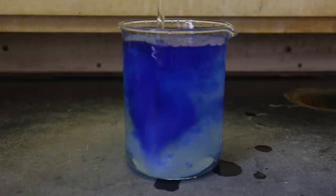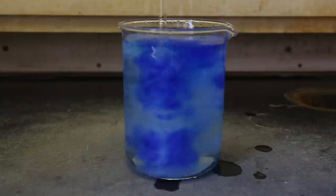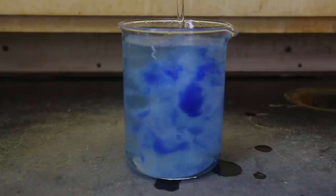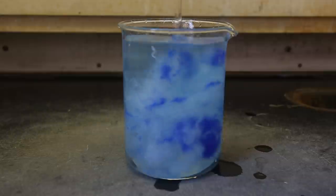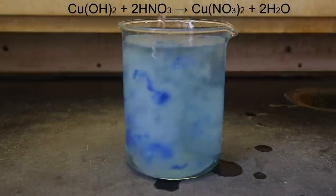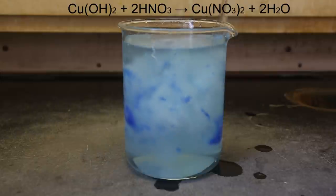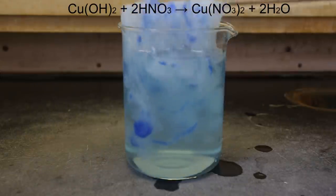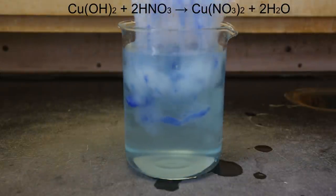Eventually, most of the Schweizer reagent was neutralized. Like the sulfuric acid solution, the solution slowly took on a faint blue color. This is due to the formation of copper nitrate as shown in the reaction above. Like with the other acids, the nitric acid reacts with the copper hydroxide to form its corresponding salt. Like copper sulfate, copper nitrate is blue when dissolved in solution.